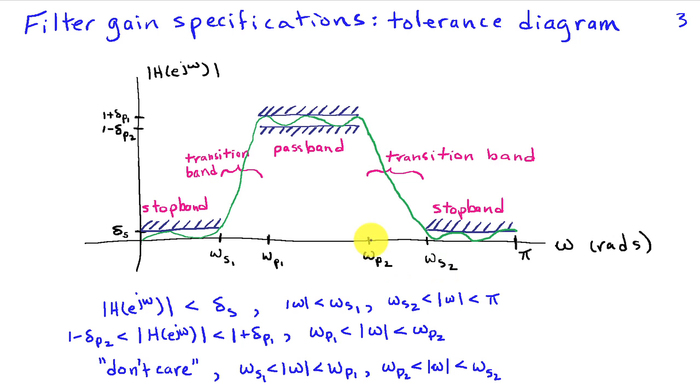And then there's a transition band. So the edge of the pass band and the edge of the stop band are separated to allow for the filter response to go from pass to stop band.